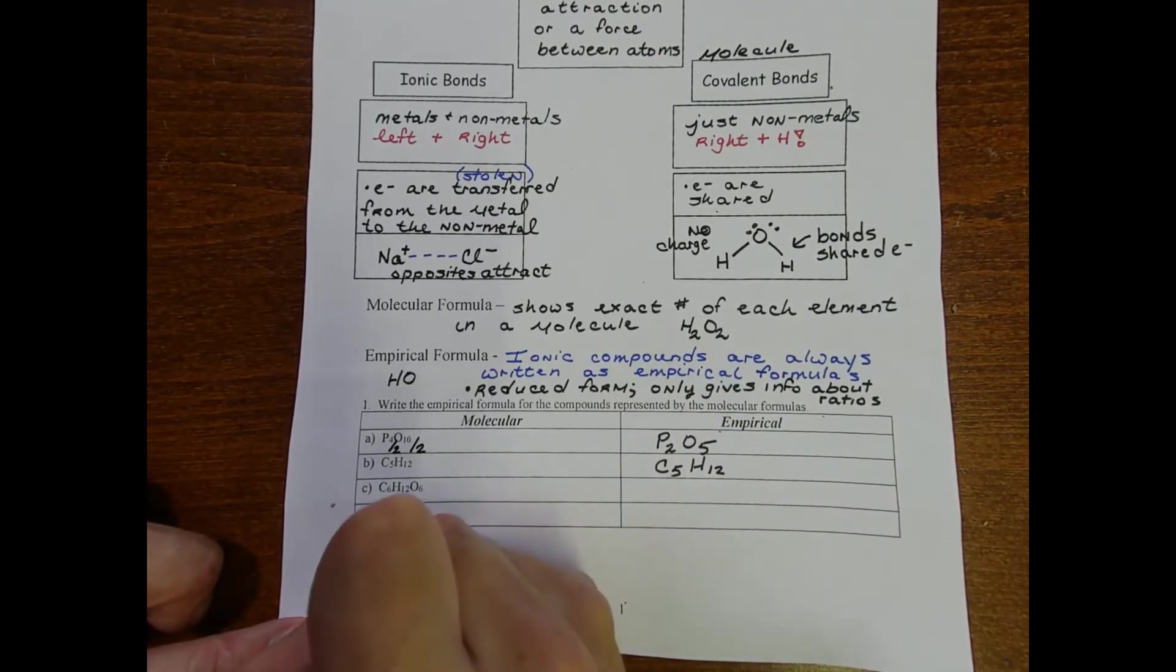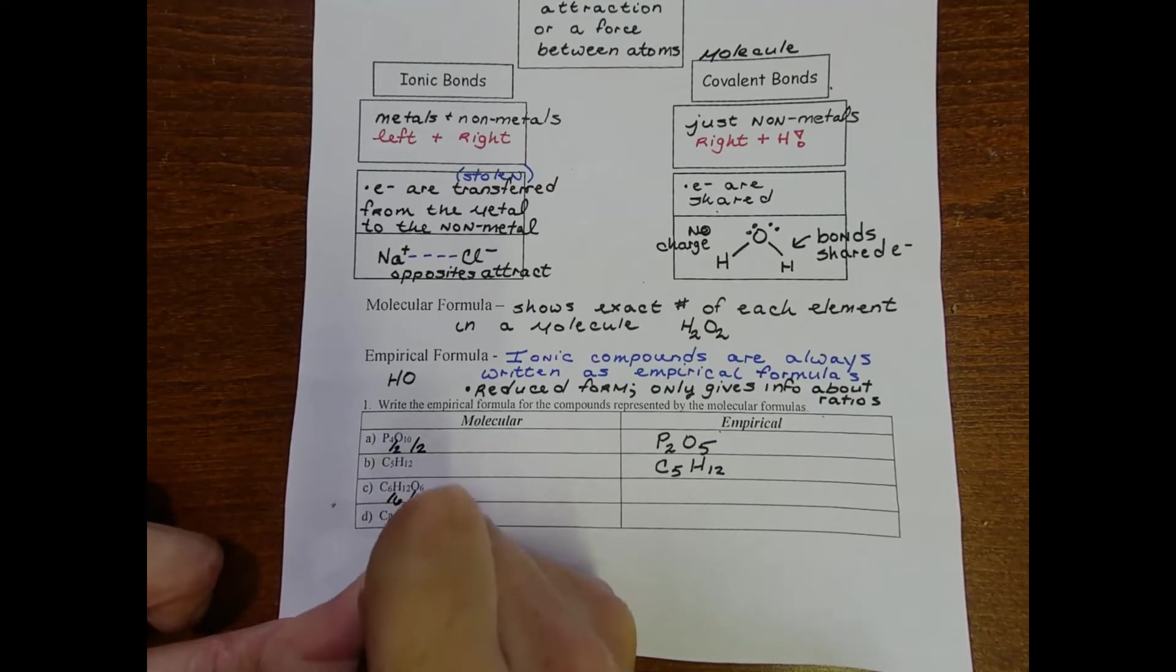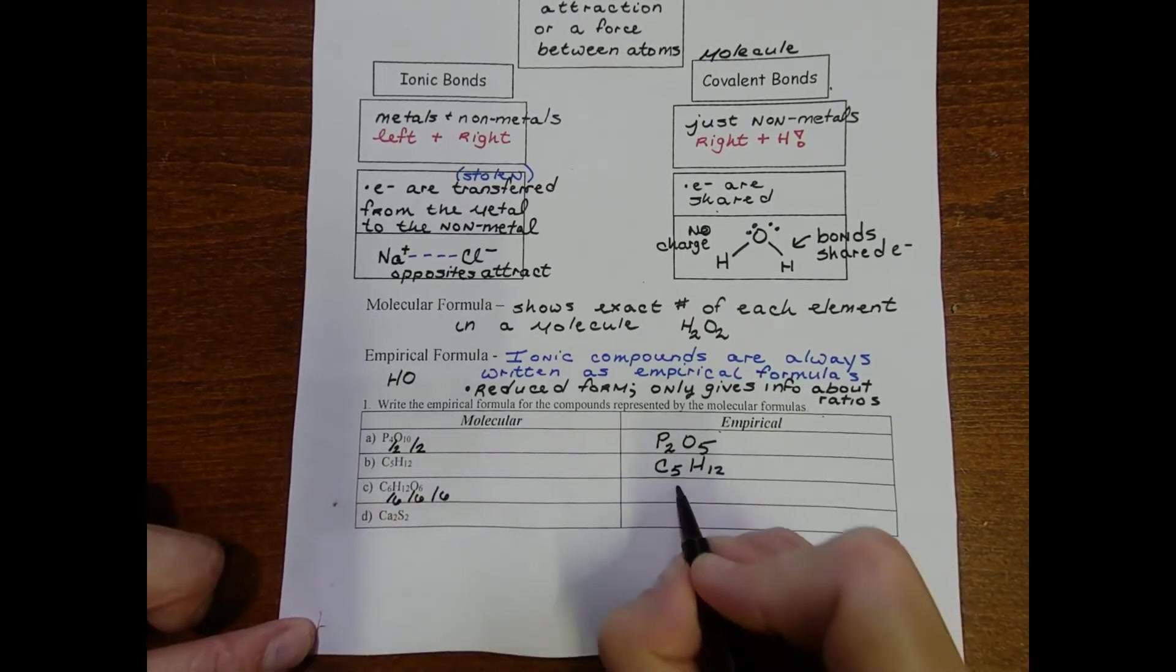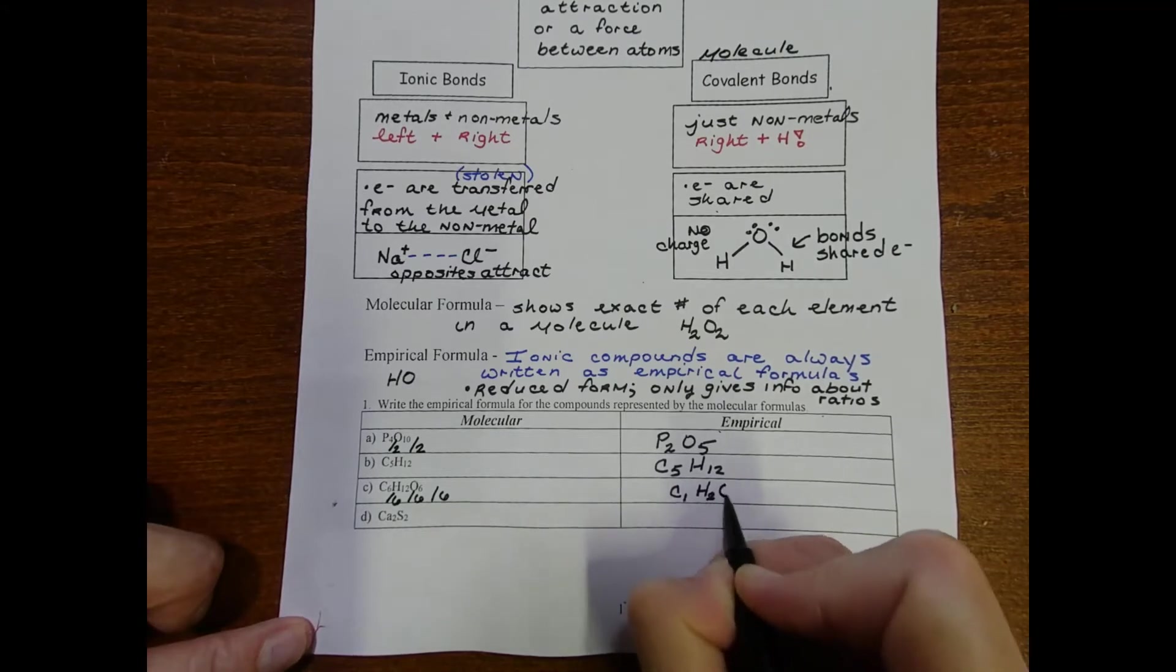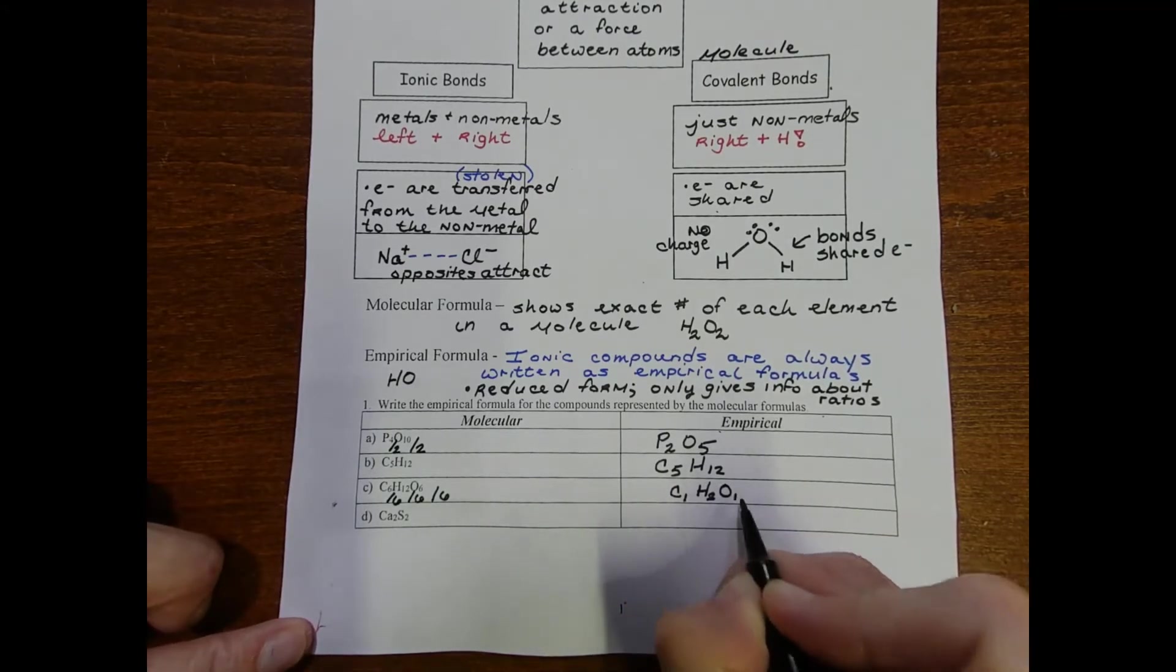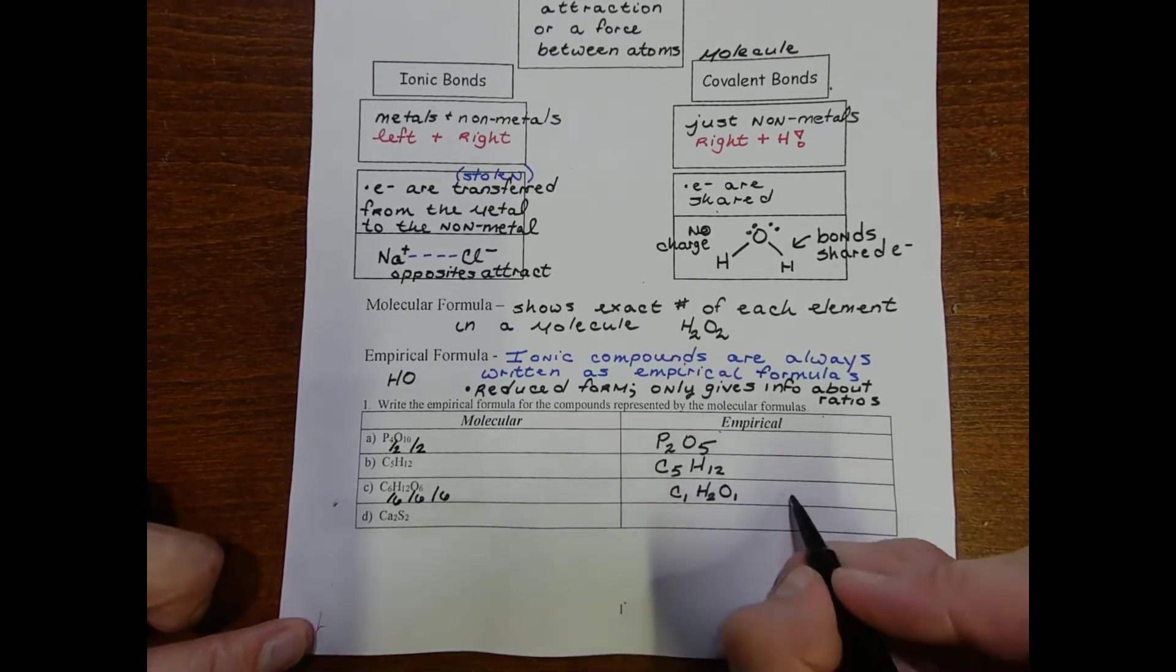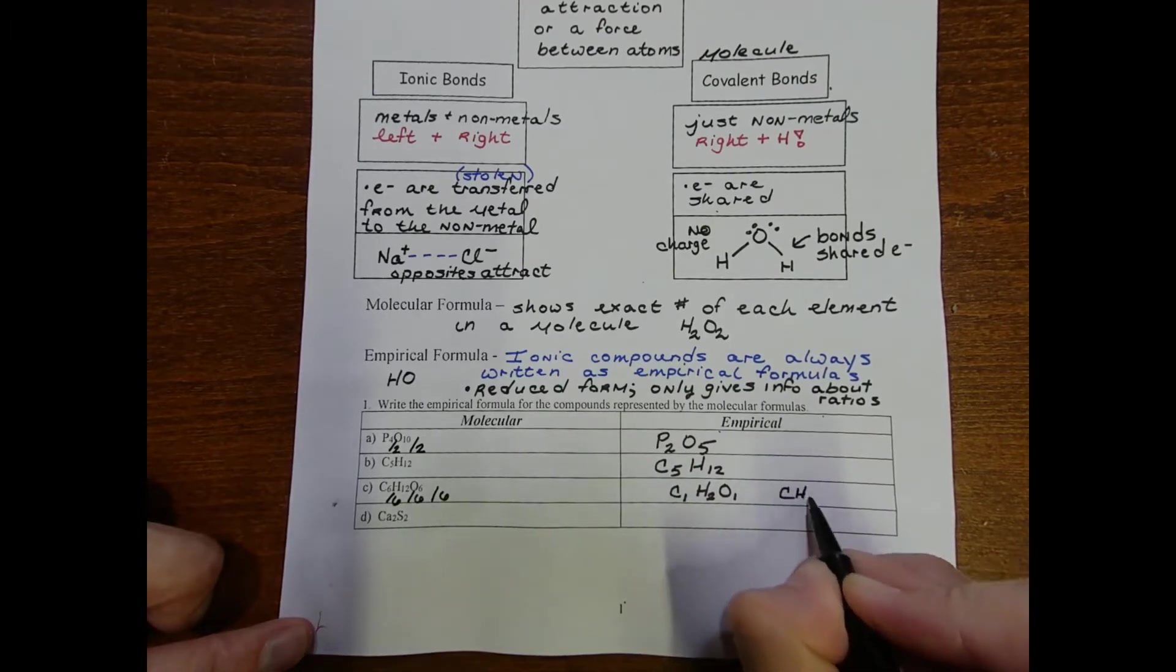C6H12O6 - looks like I can divide everything by 6, so I can rewrite this as C1H2O1, but the ones are understood so CH2O.